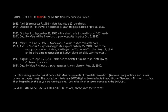What GAN is saying here is to look at geocentric Mars movements of complete revolutions — known as conjunctions — and halves — known as oppositions. The procedure is to take a good high and low — and 'good' is the key word — note the position of geocentric Mars on that date, then keep tabs on it as you go forward. Let's take a look at some examples in the Euro/US dollar. You must have a time cycle due as well — always keep that in mind.